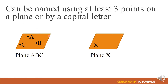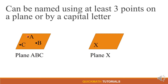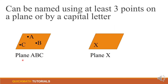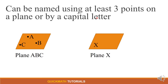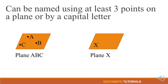Also, a plane can be named using at least three points on a plane. For example, we have points A, B, and C — so we can name this plane as plane ABC. A plane can also be named by a single capital letter; for example, this plane can be named plane X.